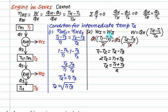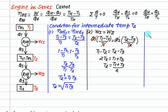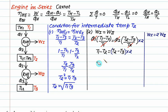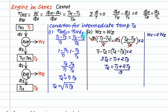So when we have equal work, T2 is the arithmetic mean, and when we have equal efficiency, T2 is the geometric mean. For other cases, such as when W1 is two times W2, we multiply one side by a factor of two and solve similarly, getting a modified expression for T2. The standard cases to remember are: for equal efficiency, T2 is the geometric mean; for equal work, T2 is the arithmetic mean. Note that temperatures must be in Kelvin.